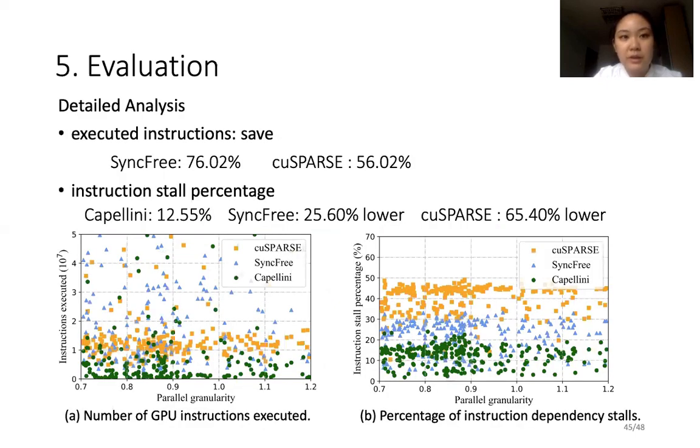Besides, Capellini launches fewer warps than the previous SyncFree, and our algorithm is also more concise. We measure the number of GPU instructions executed and the percentage of instruction stall to exhibit the instruction executions of different algorithms. Figure A shows the number of executed instructions. In general, Capellini saves 76.02% instructions compared to the SyncFree and 56.02% instructions compared to the cuSPARSE. Figure B shows the instruction stall percentage. The value of our Capellini is 12.55%, which is 25.6% lower than SyncFree and 65.4% lower than cuSPARSE.